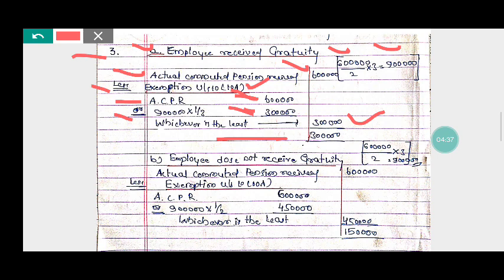Out of the two amounts — six lakh or three lakh — whichever is the least is allowed as exemption. So three lakh is less, therefore three lakh is allowed as exemption under Section 10(10A). Out of the six lakh total received, the taxable commuted pension is rupees three lakh if he received a gratuity.